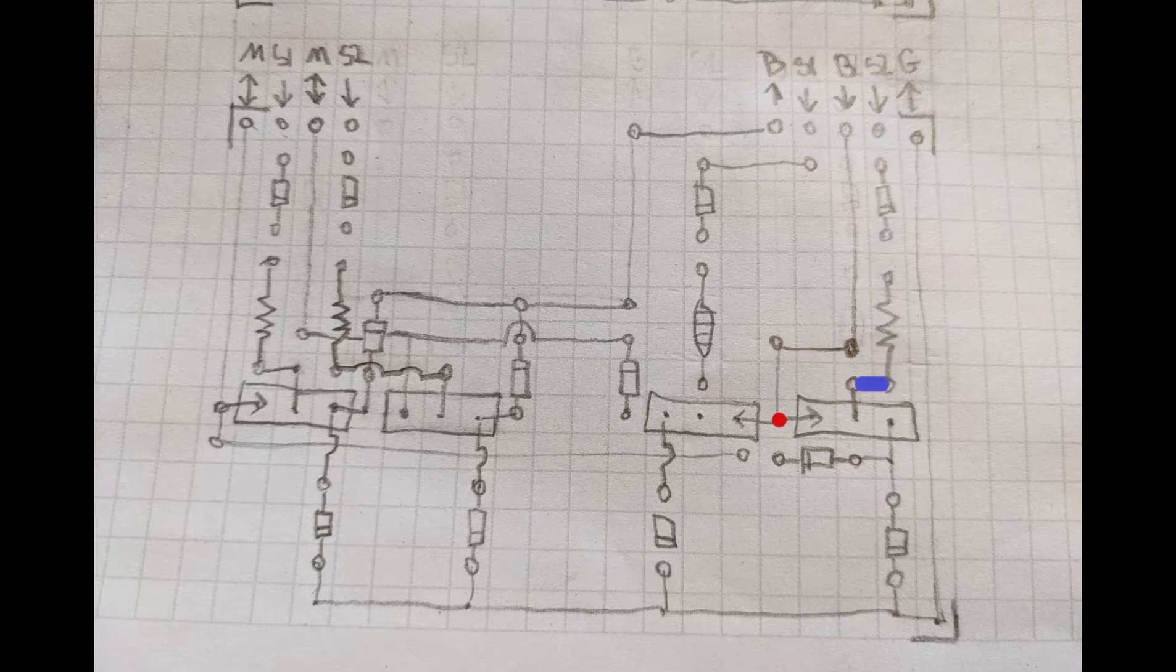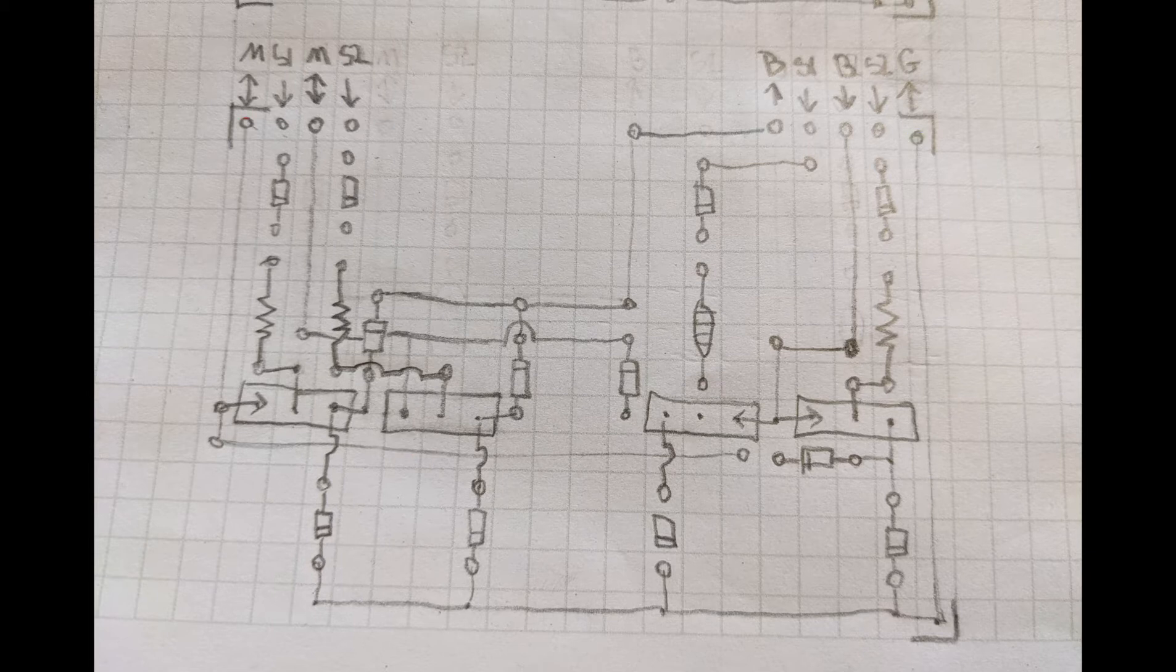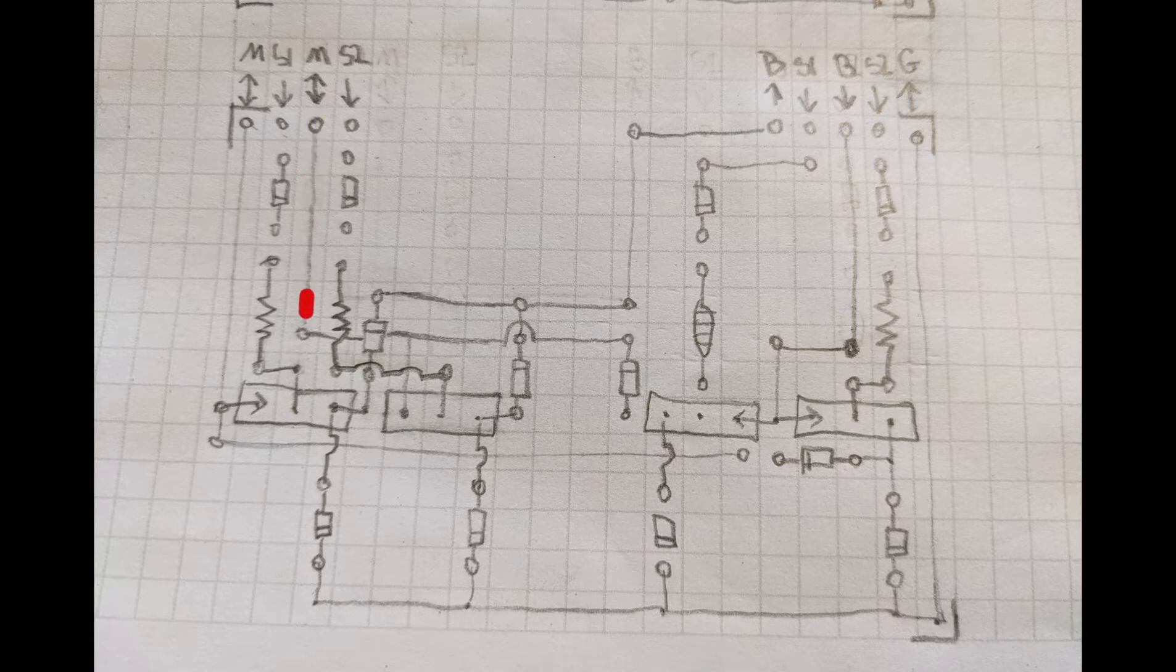If we want to switch the direction of the motor, we turn on S2, which pulls us through to the other side of the motor. If we try to get to ground coming out again, the diode stops us, so we come back down and S2 pulls us through and back up to the battery. Successful switch. Time to put it all together.